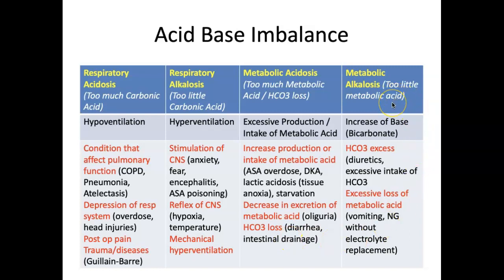Metabolic alkalosis is too little metabolic acid or an increase in base. This occurs through bicarb excess: with diuretics, a lot of urine is produced and bicarb is retained. There may be excessive intake of bicarb through anti-ulcer medications such as Tums. Excessive loss of metabolic acid through vomiting or NG tube suctioning without replacing electrolytes are also important causes.